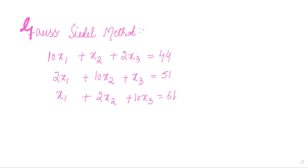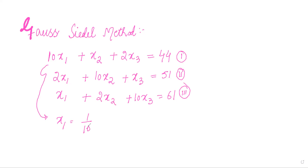First of all, from equation one — let me call it equation one — we will obtain the value of x1. x1 will be equal to one-tenth of 44 minus x2 minus 2 times x3.